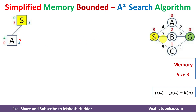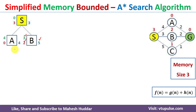We expand S to B, adding B into memory — memory is now full. For B, g(n) = 3 and h(n) = 2, so f(n) = 5. We still need to expand S to C, but there is no space. The solution is to remove the child node with the maximum f-value: A has f = 4 and B has f = 5, so B has the higher value and is removed. Then C is added.